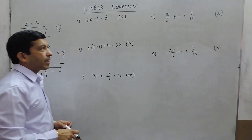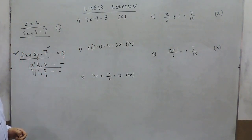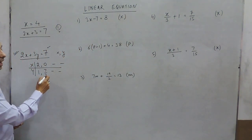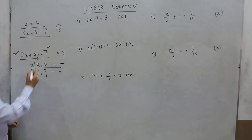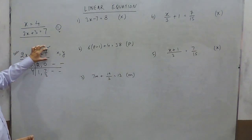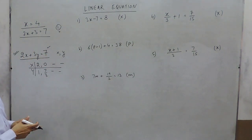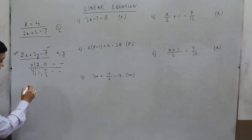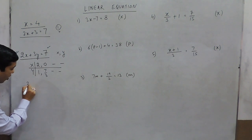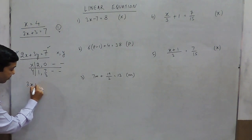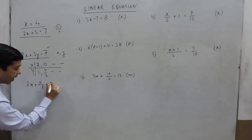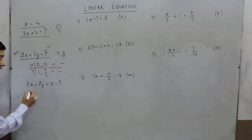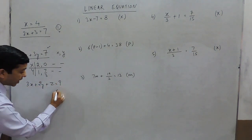If we have an equation with both x and y, it is a linear equation in two variables. And if I write 3x plus 2y plus z equals 9, now in this equation x, y, and z — three variables — are being used.